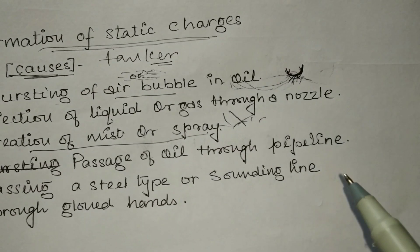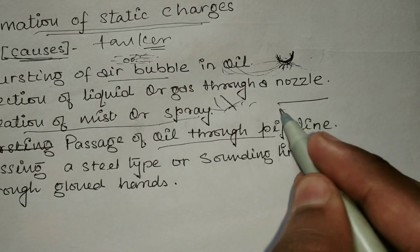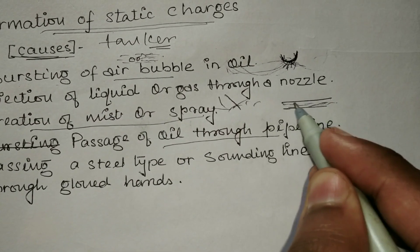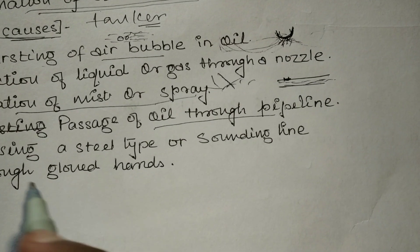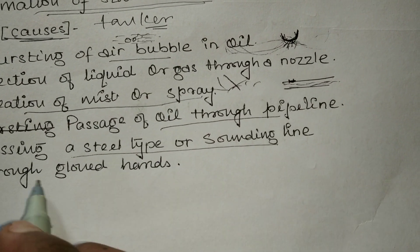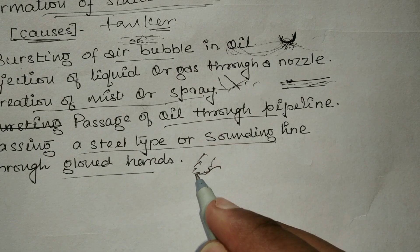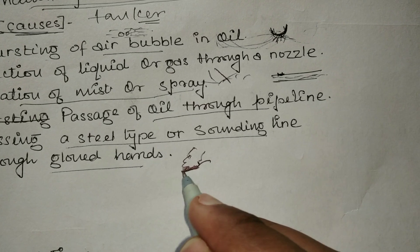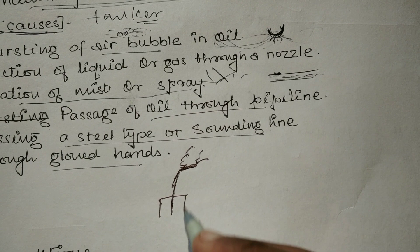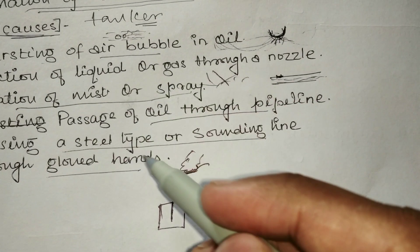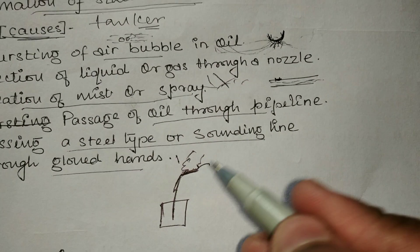The fourth cause is the passage of oil through the pipeline, which may cause the formation of electric charge. The last cause is passing a steel-type sounding line through synthetic gloves — if you are wearing synthetic gloves and passing or touching a steel line inside the tank, it may give rise to static charge.